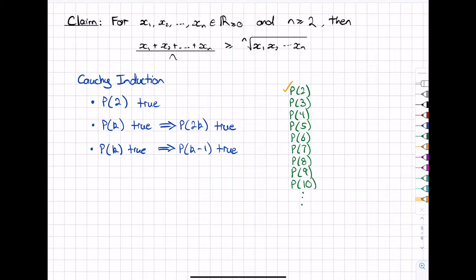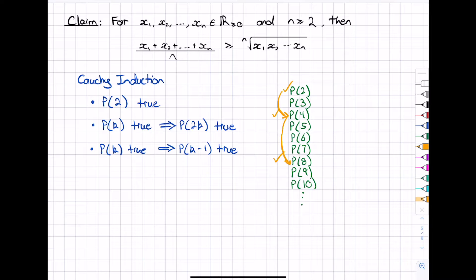Since p of 2 is true, the second statement says if a statement is true for some value n then it's true for two times that value. So from p of 2 we get p of 4. From p of 4 we get p of 8, then p of 16, and so on — jumping forward through powers of 2. But we've missed p of 3, p of 5, p of 6, p of 7, and so on.